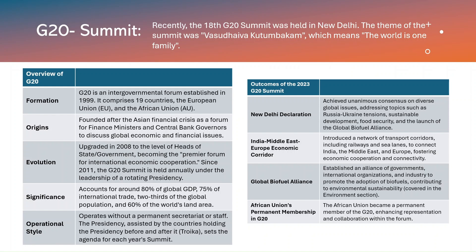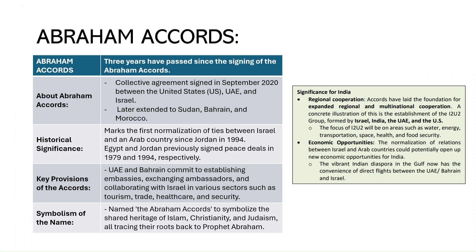The G20 Summit was held in India last year. The New Delhi Declaration, Global Biofuel Alliance, India-Middle East-Europe Economic Corridor, and the African Union's permanent membership in G20 are the major highlights of the G20 Summit.